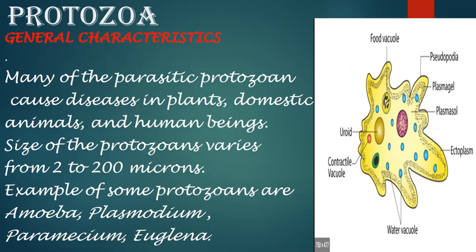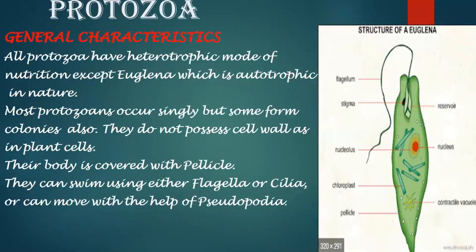Some common examples of protozoans are Amoeba, Plasmodium, Paramecium and Euglena. All protozoa have a heterotrophic mode of nutrition, meaning they depend on others for their food, except Euglena which is autotrophic in nature. Most protozoans occur singly but some form colonies. They do not possess a cell wall as in plant cells, but their body is covered with a pellicle — a thin layer supporting the cell membrane. These protozoa can swim using either flagella or cilia, hair-like structures for locomotion, or can move with the help of pseudopodia.